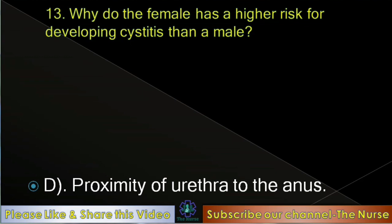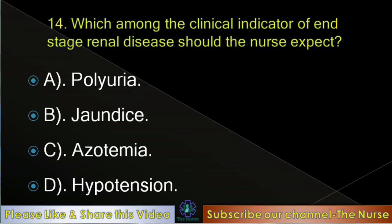Next question: Which among the clinical indicators of end-stage renal disease should the nurse expect? Options: Polyuria, jaundice, azotemia, hypotension. Correct answer: Azotemia.